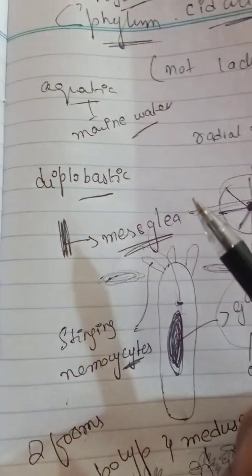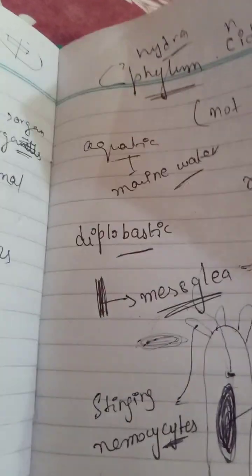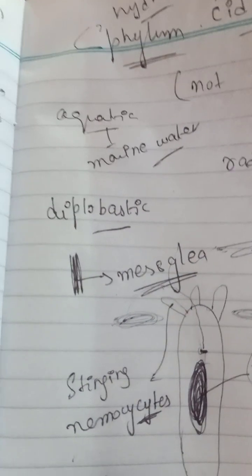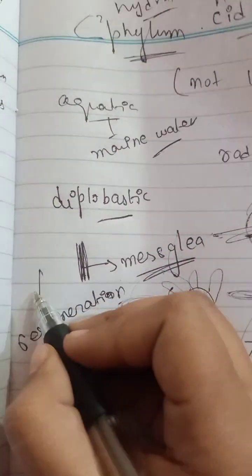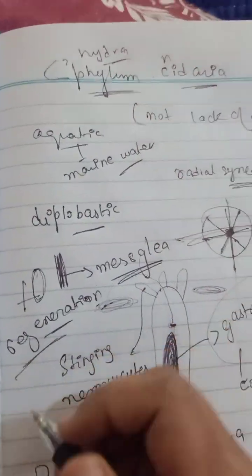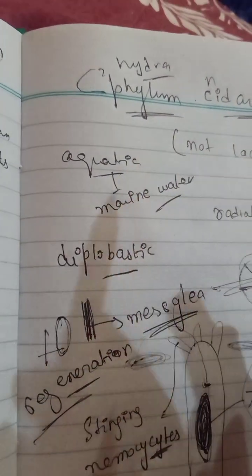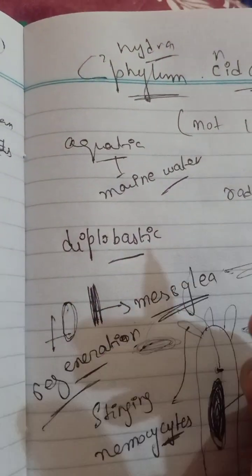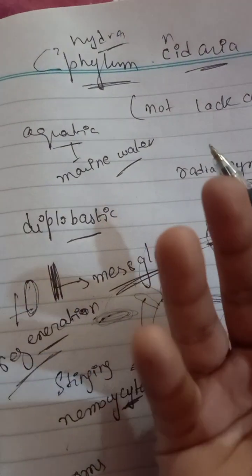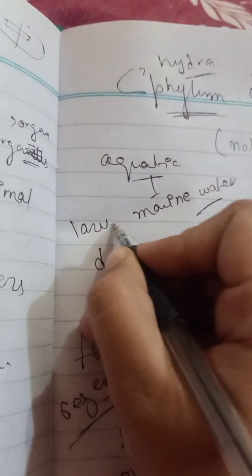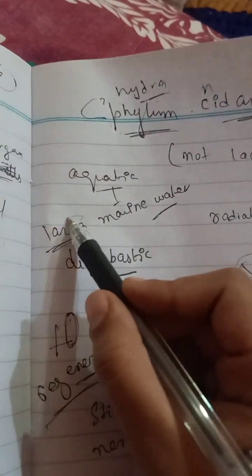Cnidarians can reproduce by both sexual and asexual methods. Asexual reproduction occurs by budding, and they also have a regeneration process — similar to a lizard regrowing its tail, they can regenerate if their body is cut. In sexual reproduction, egg and sperm are released into the water and a new free-living motile larva is formed. Most species can be sessile, meaning not movable, or motile, meaning free-living and movable.